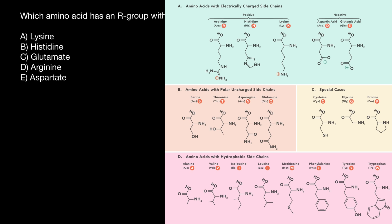How come? Out of 20 amino acids, only certain amino acids have a charge at the physiological pH, which is 7.4. And histidine, though shown in the group with positive charge, at physiological pH usually doesn't have a charge.